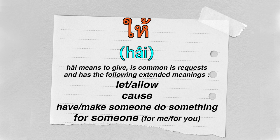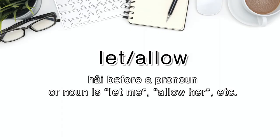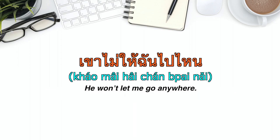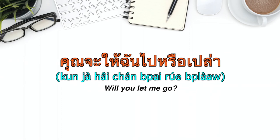As we learned previously, ให้ is used for 'let' or 'allow.' Hai before a pronoun or noun means 'let me' or 'allow her.' For example: 'He won't let me go anywhere.' คุณจะให้ผมไปรึเปล่า (koon ja hai pom bpai rue brao) means 'Will you let me go?' The word รึเปล่า (rue brao) is shortened in spoken form.